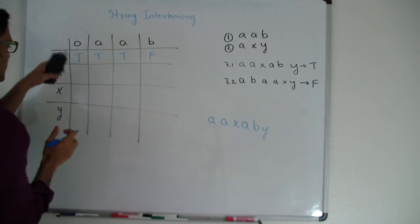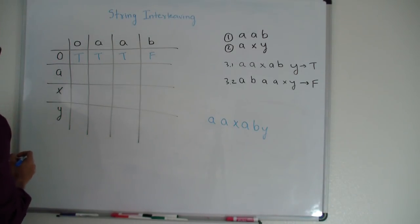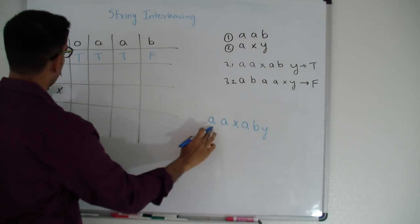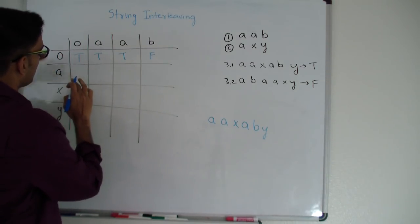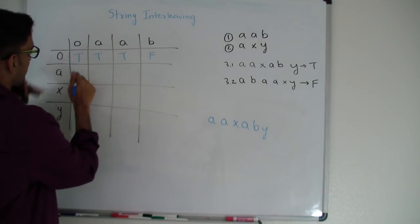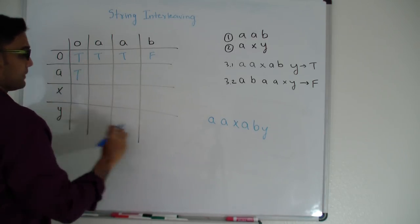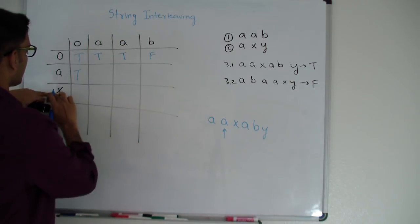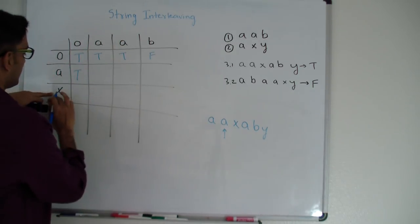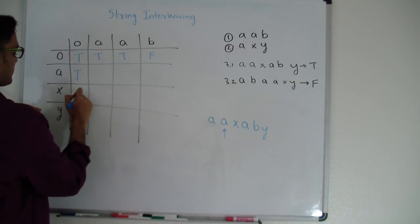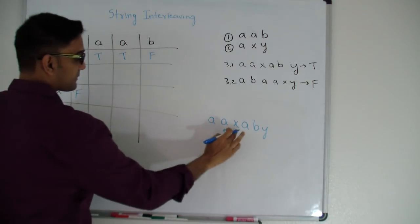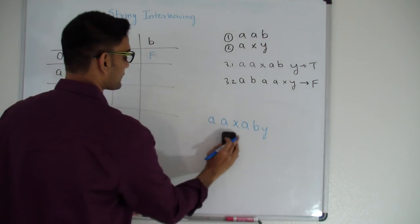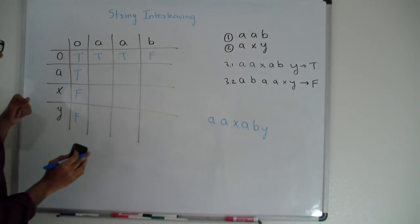Now let's fill up the zeroth column. Here 'a' is same as 'a'. When they are the same, I check if the value on top of me is true. It is true, so this also becomes true. Now comparing 'a' with 'x' — the second character here and the second character here — they are not the same, so this is false. Comparing 'y' with 'x' — they're different — so this is false. So I've filled up my zeroth row and zeroth column.